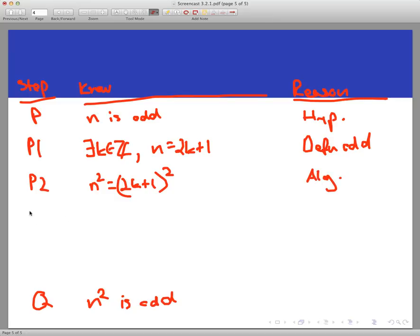So let's use the FOIL method to expand out the right-hand side. That would give me 4k squared plus 4k plus 1. Again, that's FOILing, algebra, whatever you want to call it. Let's now factor out a 2 from some of these terms here. 2k squared, 2k plus 1. Again, that's algebra. That's factoring.